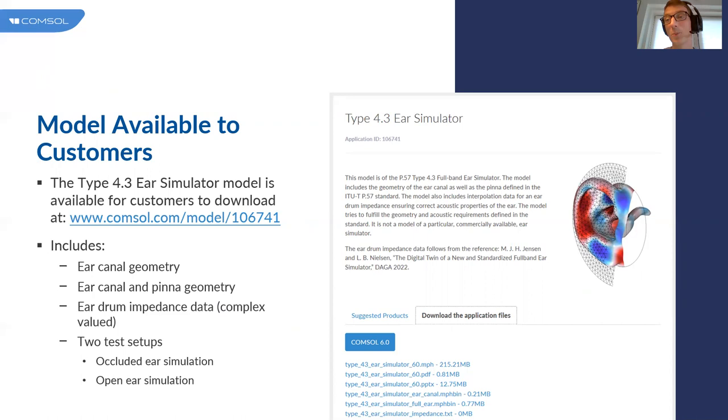The model has two test setups. It has an occluded ear setup where we compute the transfer impedance of the system so you can compare that to the standard. Then it has an open ear simulation where acoustics from the outside is incident on the open ear including the pinna. If you're interested, I highly invite you to go to the COMSOL homepage. Just search for Type 4.3 and you will get immediately to this model that you can download if you have a COMSOL license.